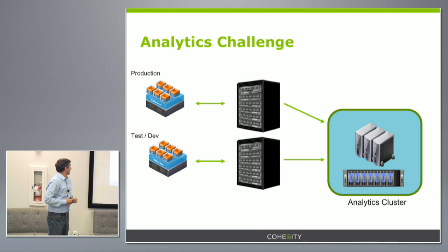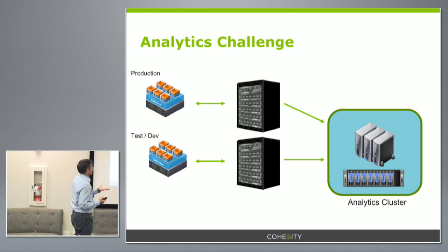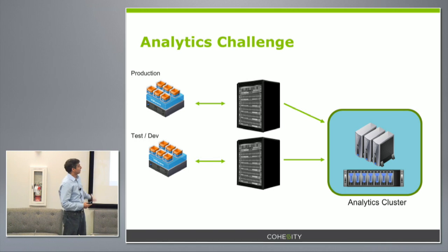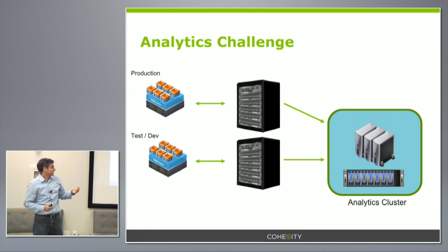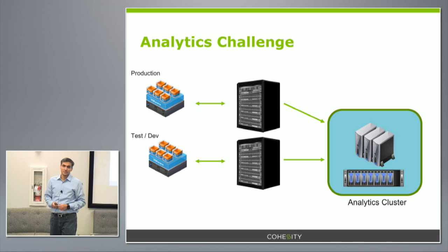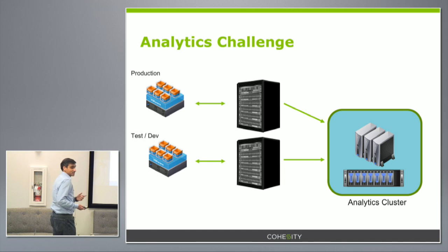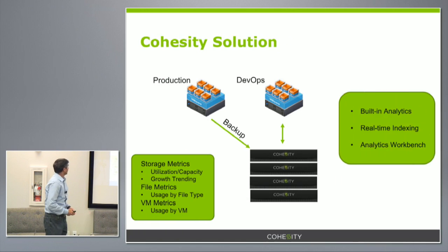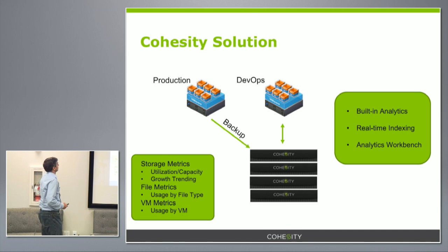To do any analysis you might have to create yet another infrastructure stack — the analytics cluster — copy the data over, throw in more compute resources, and so on. This makes it inefficient and expensive, and this is why secondary data stays dark. At Cohesity we want to fix that, and Cohesity's architecture puts us in a good spot for solving this problem.